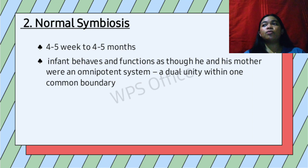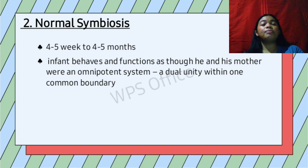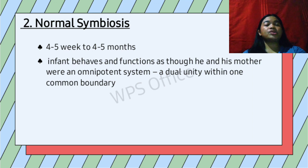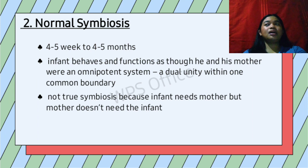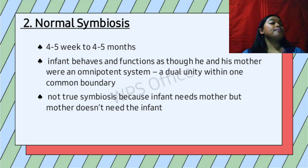Using the unhatched bird egg analogy, this is the time when the egg is beginning to break, but the infant is still protected by a psychological barrier in the form of a symbiotic connection. However, Mahler noted this is not a true symbiosis — because true symbiosis would be mutual. Here, the infant needs the mother, but the mother does not need the infant in the same way — the mother can survive without the infant, but the infant cannot survive without the mother.